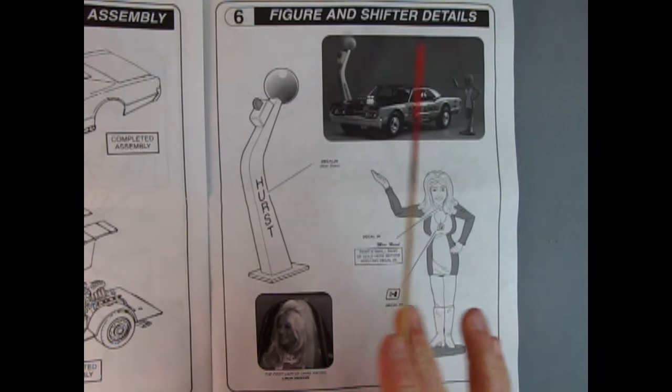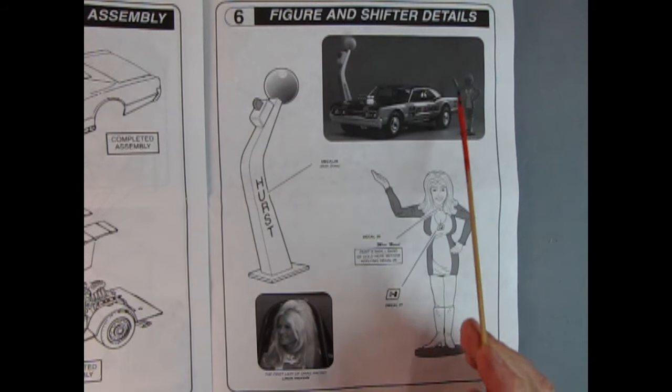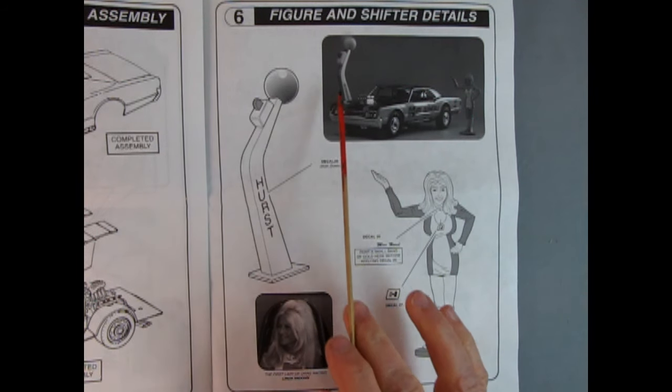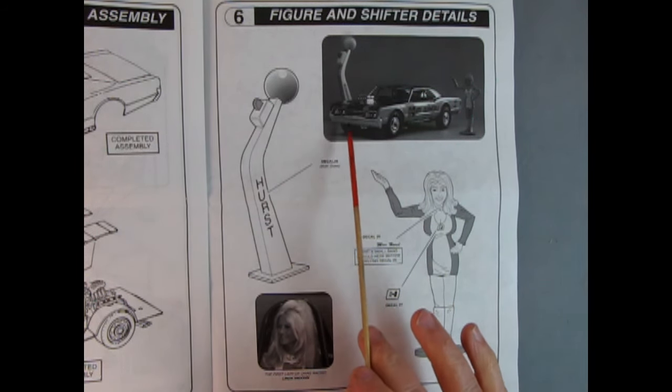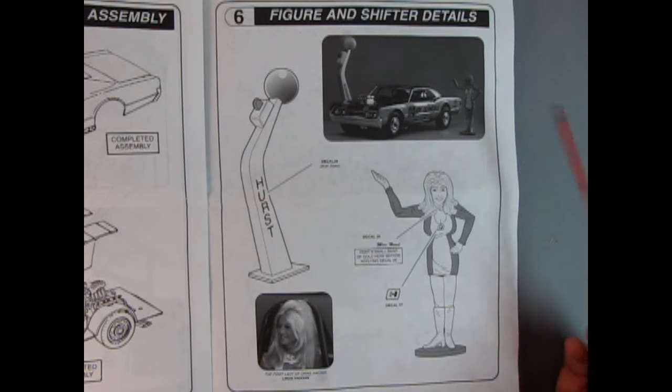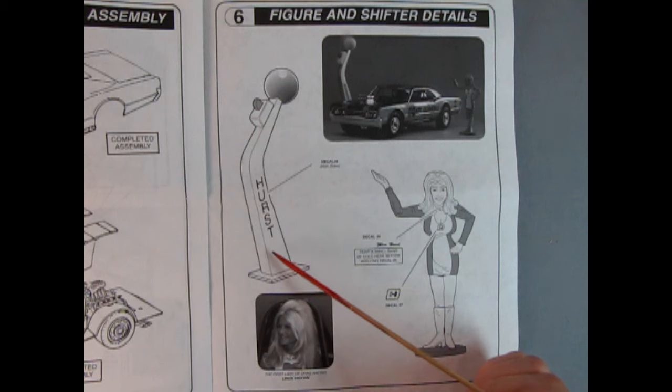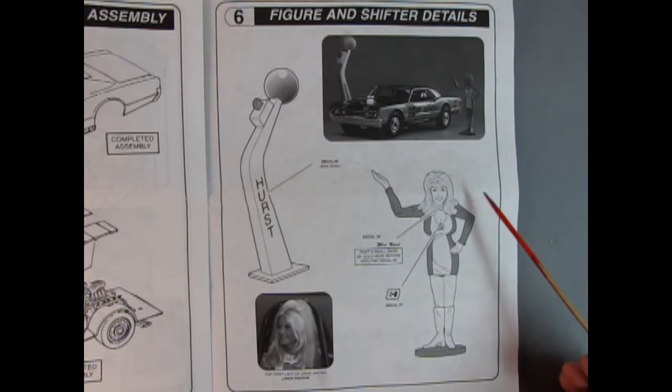Panel six shows the figure and shifter details. We have a wonderful picture of the golden shifter, the Hurst Hairy Oldsmobile, and Miss Linda Vaughn herself. Here we see where to put the decals on both sides of the Hurst shifter and the decals for Linda Vaughn, which comes pre-painted. Down here it says the first lady of drag racing, Linda Vaughn, and there is her picture.